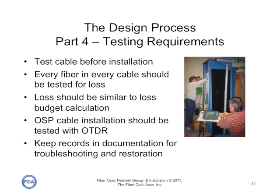With a complete design, we then specify testing requirements. Very often we test cable before installation to make sure it is good before we spend the money to put it in the ground or in the air. Every fiber and every cable should be tested for loss after it is installed, and the loss should be similar to the loss budget calculation we did during the design phase. Outside plant cable installation will usually be tested with an OTDR, especially if there are intermediate splices, because that is the only way we have of proving the splices are good. All of the test records are kept for documentation for future troubleshooting, specifically if we have to do restoration.